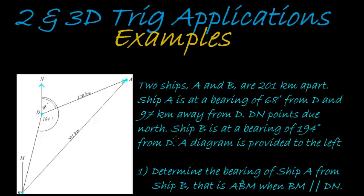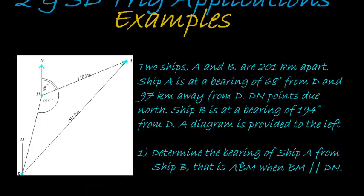Ship B is at a bearing of 194 degrees from D, so his bearing goes all the way around to 194 degrees. A diagram is provided to the left.